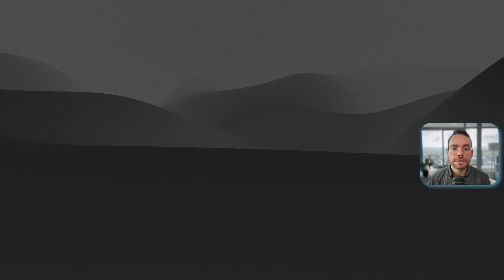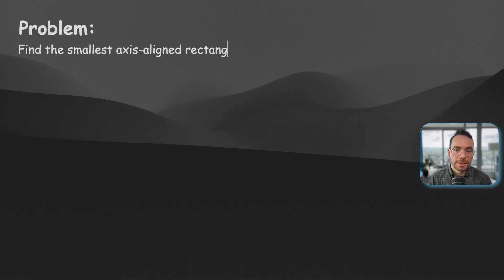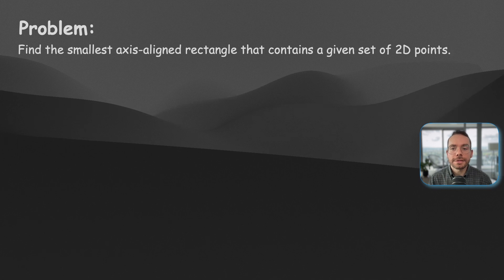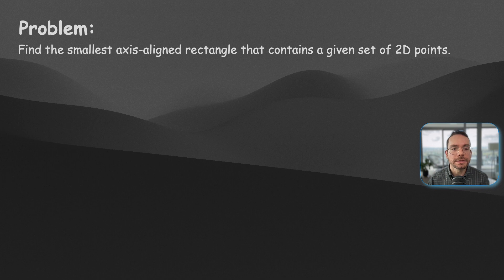Here is a simple problem to demonstrate the importance of constant factor improvement. The problem is we want to find the smallest axis-aligned rectangle that contains a given set of 2D points.